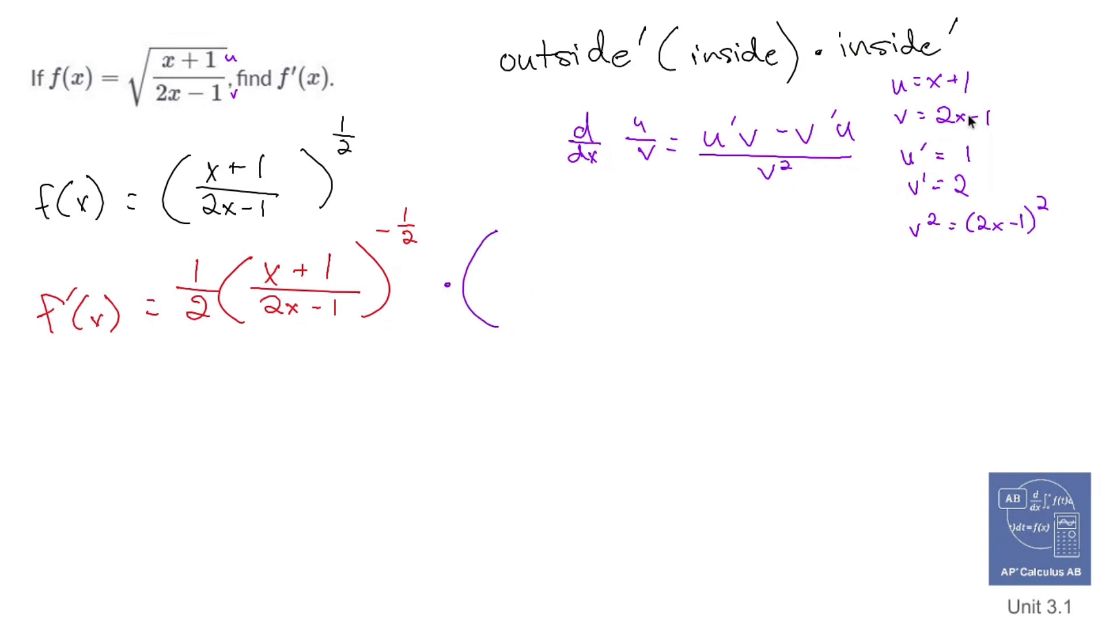U prime v is going to be 1 times v, which is 2x minus 1, minus v prime which is 2, u which is x plus 1, and again that's going to be all over 2x minus 1 squared.